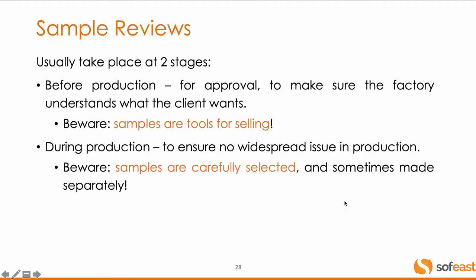Now let's look at sample reviews. Sample reviews happen before production — typically you would receive some samples from your supplier, review them yourself in your office, and go through iterations until you get perfect samples you can confirm. If it's furniture or very large pieces, obviously this is not realistic. Keep in mind that samples are really part of the selling toolbox for the supplier — they will make them as pretty as they can. It doesn't mean production is going to be exactly the same. That's why a QC checklist and potential defect list will address that.